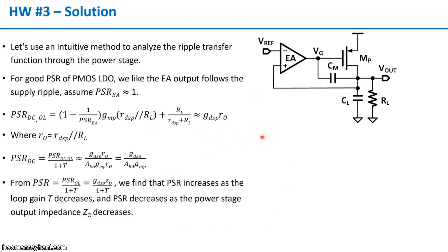In this solution, we want to provide an intuitive method to analyze this PSR of the LDO, because it will be a quite complicated solution if we calculate everything. We introduce this PSR analysis method where we calculate the open-loop PSR first, and then the closed-loop PSR or the entire PSR will be the open-loop PSR divided by 1 plus T, where T is the loop transfer function of the feedback loop.